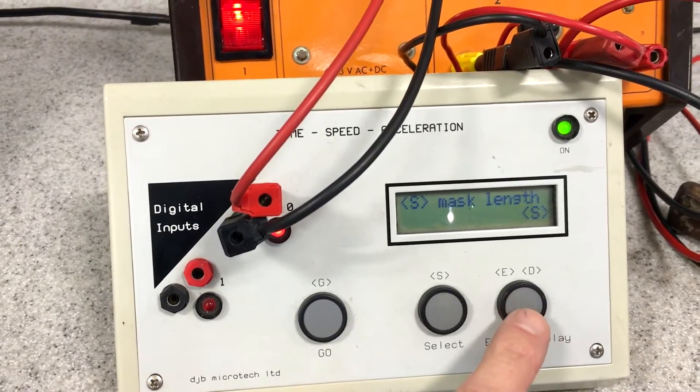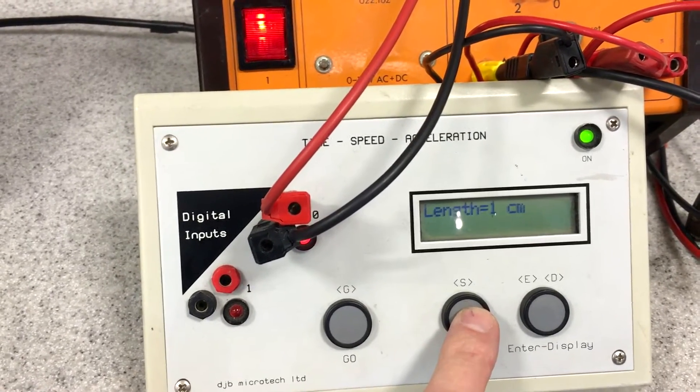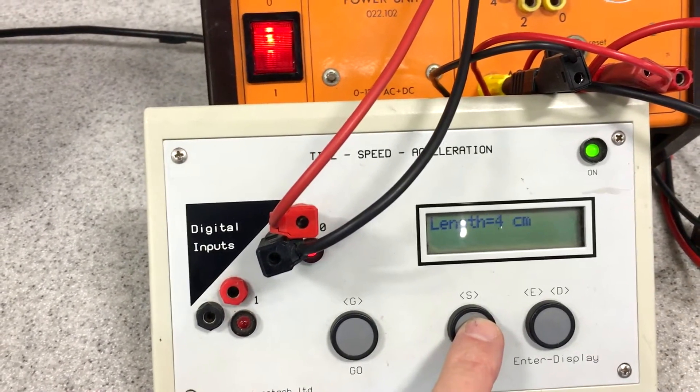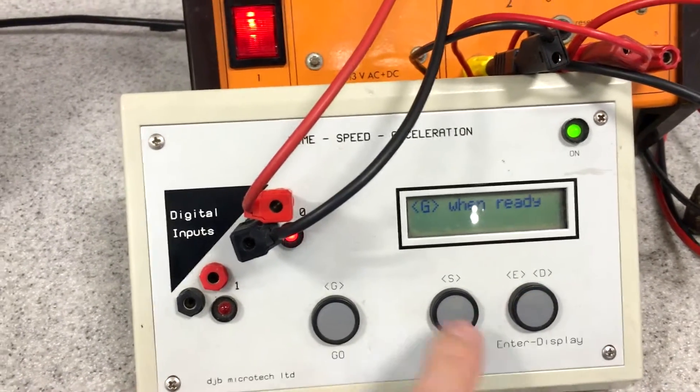I also need to tell it that the diameter of the ball is 5cm. So the thing that's going through the light gate is 5cm. And going ready.